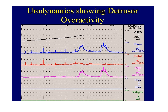This slide is headed 'Urodynamic graph showing detrusor overactivity but not urge incontinence.' The lines of abdominal pressure and vesical pressure are shown. There is a slight rise in vesical pressure during the filling phase, which is normal. Then there is a rise in detrusor overactivity, which is shown clearly. The flow and volume compartments are also visible. The rise in detrusor pressure occurs during the filling phase with no resulting leakage.